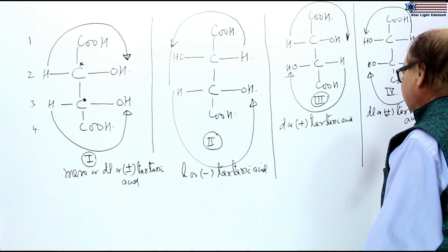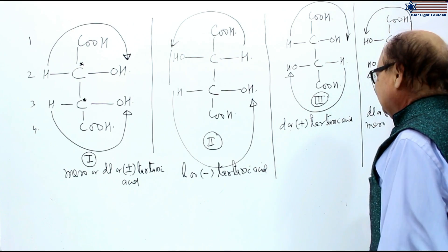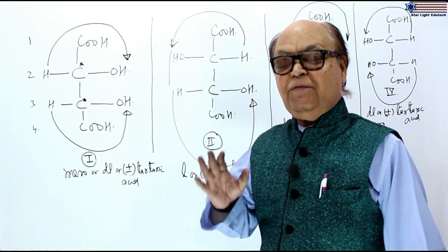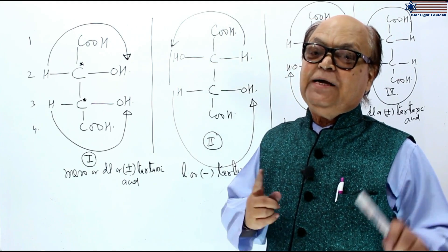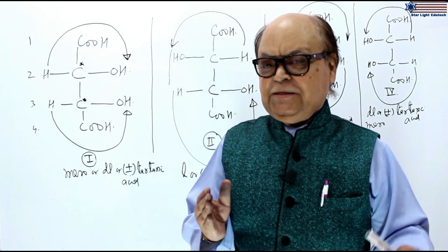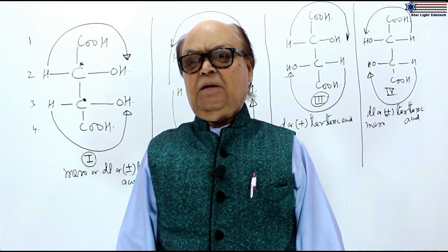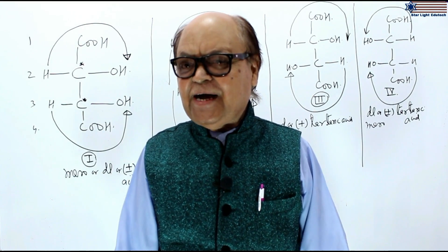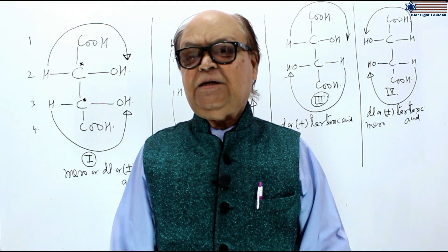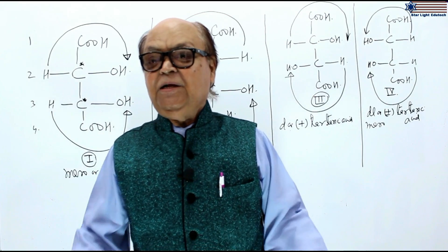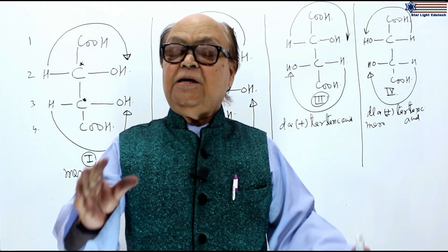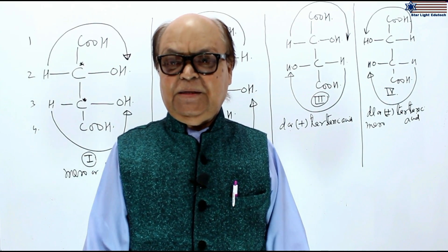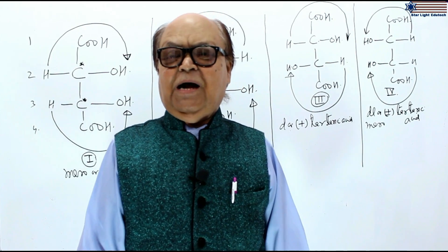Since first and fourth are both meso-tartaric acid, only one meso-tartaric acid will be counted. Therefore, tartaric acid will have three optical isomers: one D or plus tartaric acid, second L-tartaric acid or minus tartaric acid, and the third one meso or DL tartaric acid, or plus-minus tartaric acid. So there are only 3 optical isomers of tartaric acid.